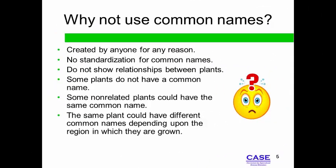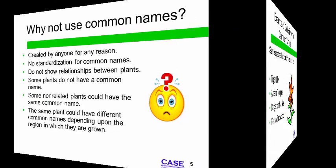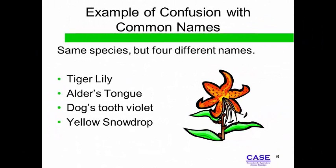Common names create confusion among the scientific communities. Because research has not been done on all plants to determine potential value to humans, it is important to clearly identify each plant. Many species have different common names, and the use of common names makes it difficult for people in the plant industry to determine the correct plant to use.